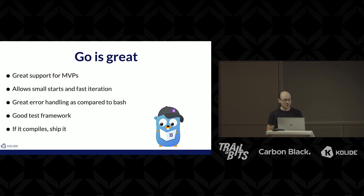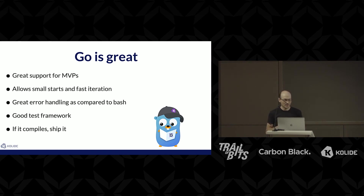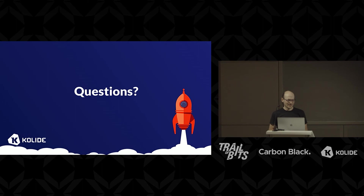I've done a lot of this in Go, and I found Go to be a really great tool. It supports MVPs really well — it lets me start small and iterate. It's got really good error handling. Coming from Bash, writing a lot of these things in Bash means huge amounts of error-checking conditionals. Go just does that a lot better. It's got a really good test framework, type safety, and that lets me say: this compiled, great, we'll build happy packages. That's package building in a nutshell.